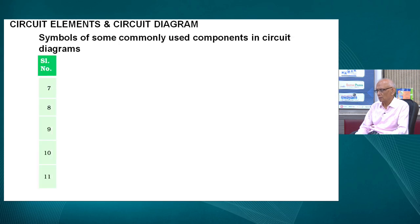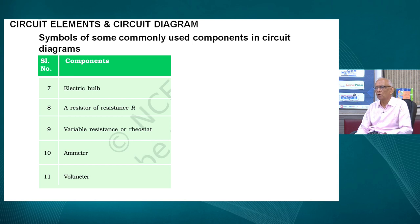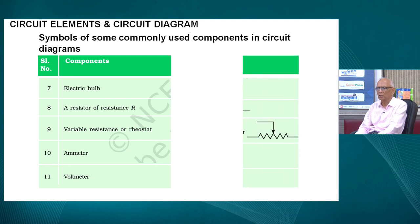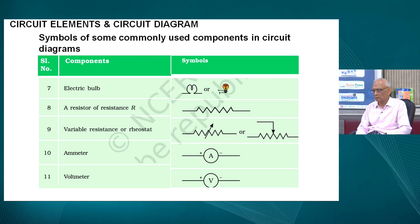There are some more components and their symbols: the electric bulb, a resistor, a variable resistor — also known as a rheostat — an ammeter, and a voltmeter. Their corresponding symbols are shown on screen. The ammeter and voltmeter are symbolically represented as shown in the last two cells of the table.